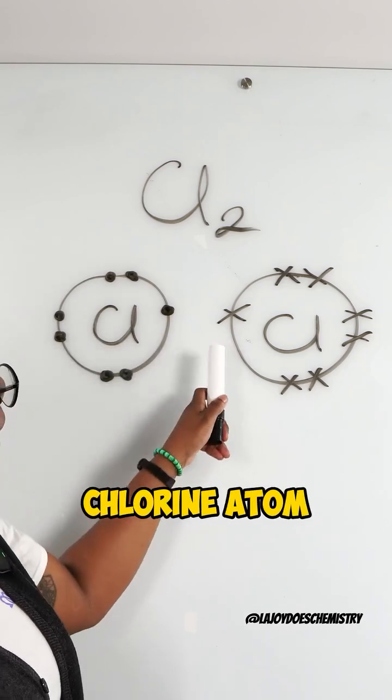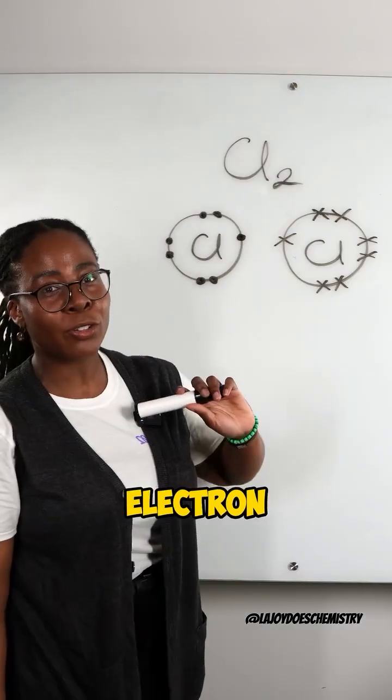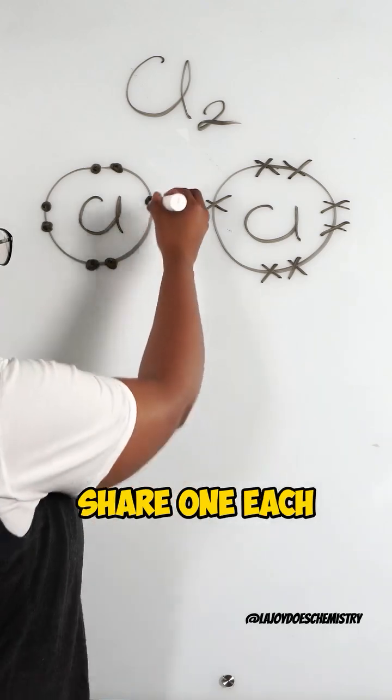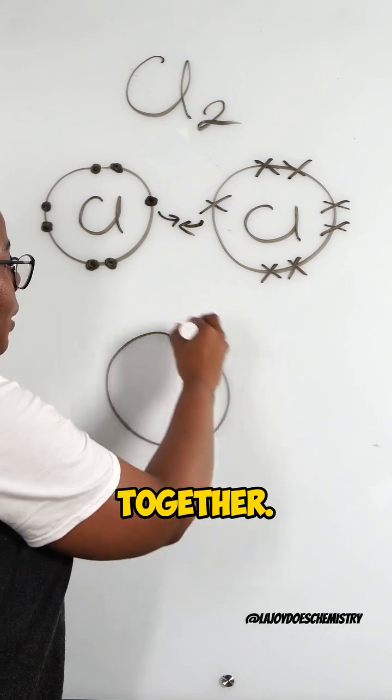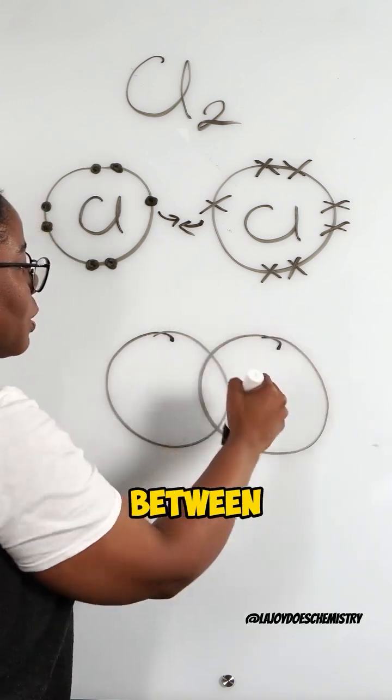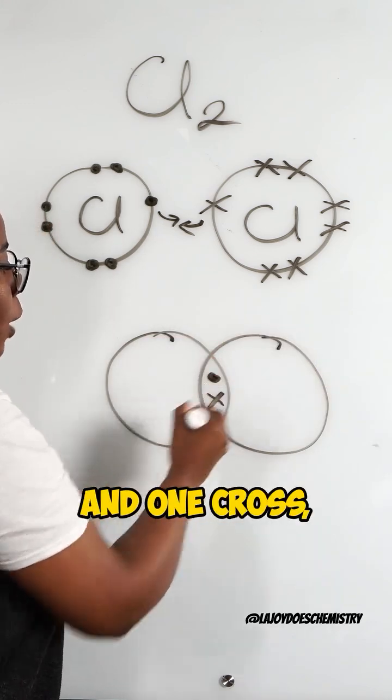Now because each chlorine atom needs one more electron to have a full outer shell, they're going to share one each and then come together. So we now have shared between them one dot and one cross.